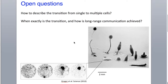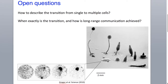How do we describe the transition from single cells to multiple cells in the early aggregate? And second, when exactly is this transition? And how do cells manage to communicate over macroscopic distances, roughly 1 mm in size?